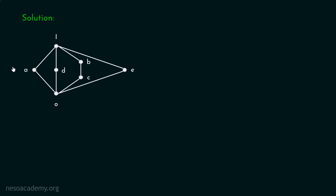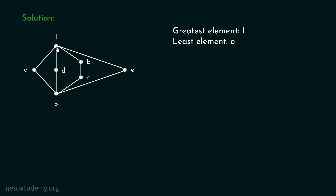We have this lattice. Let's use the trial and error method to find the complements of A. First of all, the greatest element in this lattice is I — there is no doubt about this — and the least element is O. I is the greatest element because every other element is related to I, and O is the least element because O is related to every other element. Therefore, the greatest element is I and the least element is O.